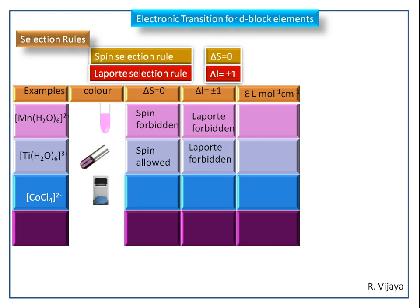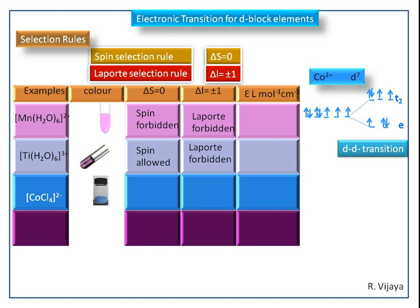Next, we see the tetrachlorocobalt(II) complex. It is somewhat dark blue in color. Its valence electronic configuration is 3d7 at the plus 2 oxidation state. It is tetrahedral geometry, so the d orbitals are split into E and T2 orbitals. During the transition, the electron is excited from the E orbital to the T2 orbital — we get a D-D transition. So this is a spin allowed transition. Because of this D-D transition, we should get a Laporte forbidden transition, but not.